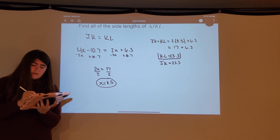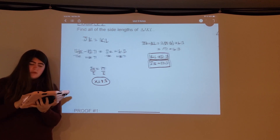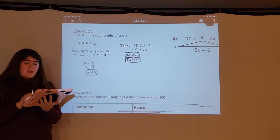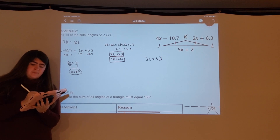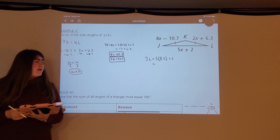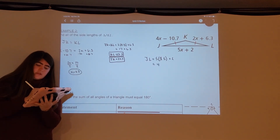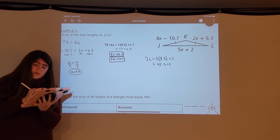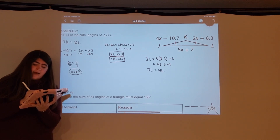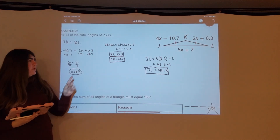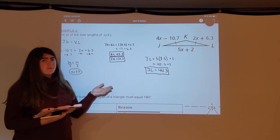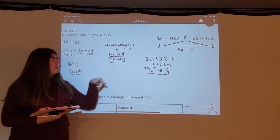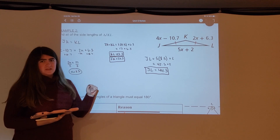Now that we have two side lengths, we can solve for the third side, JL, which equals 5x plus 2. So JL equals 5 times 8.5 plus 2, which is 42.5 plus 2, giving JL equals 44.5. All three side lengths are 23.3, 23.3, and 44.5. You need to identify all three pieces separately — you can't just write JK equals KL equals 23.3.